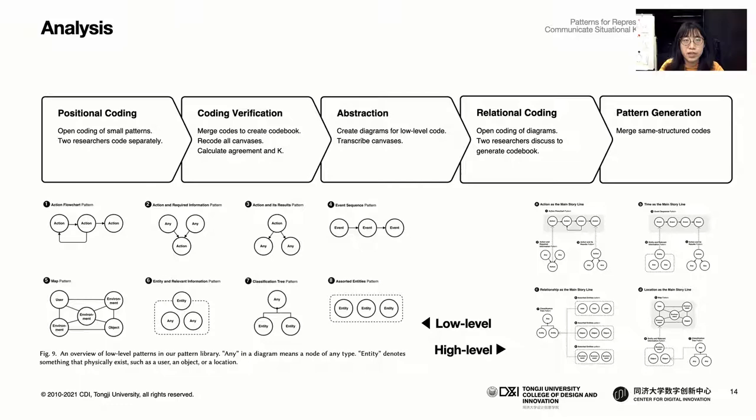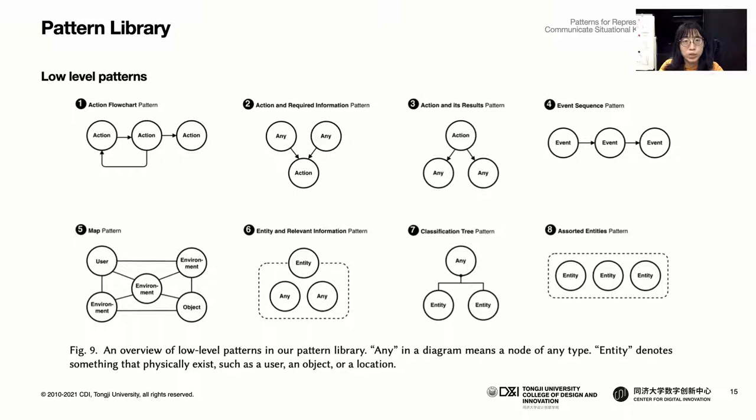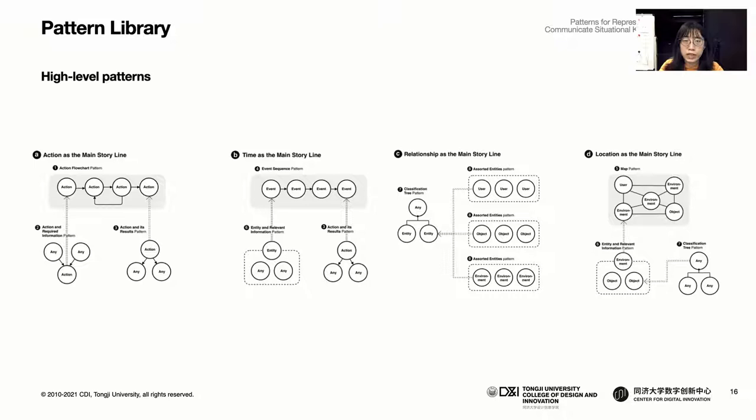The low-level patterns, or components, provide various ways of grouping knowledge elements to communicate short pieces of information — like using affinity to group similar knowledge, or using location on the canvas to indicate where events happened within the room. The high-level patterns, or modules, are ways to combine and organize components to tell a more complex story. For example, participants may nest many smaller patterns within a larger flowchart pattern to show the robot's reasoning and knowledge it used while carrying out a task.